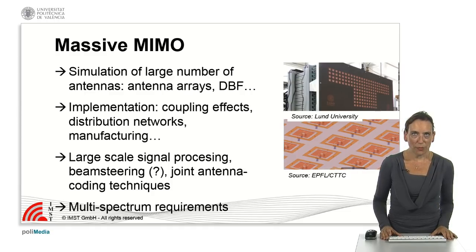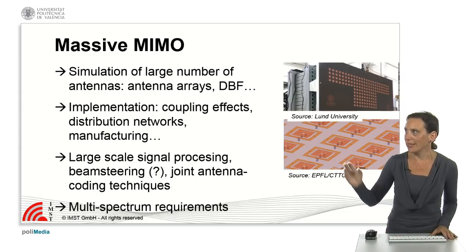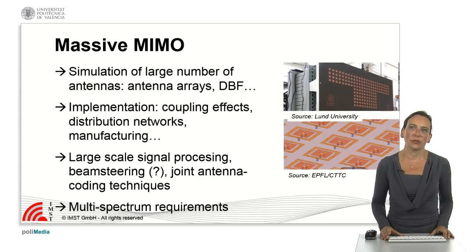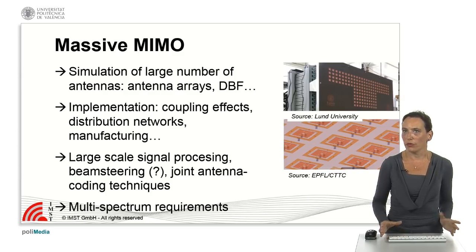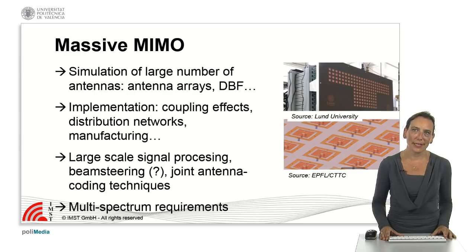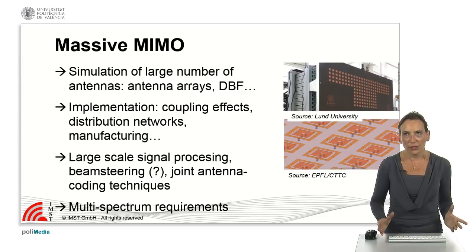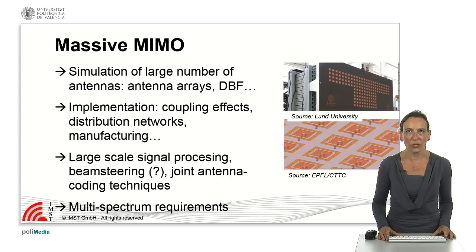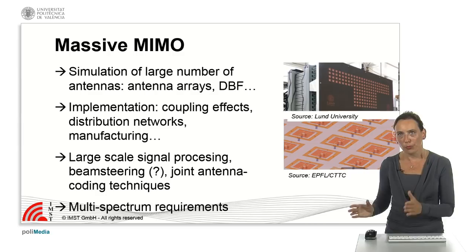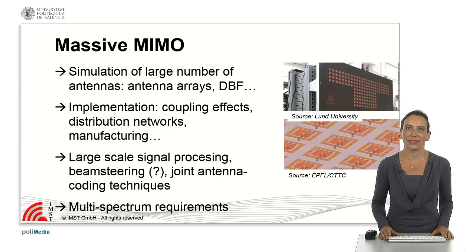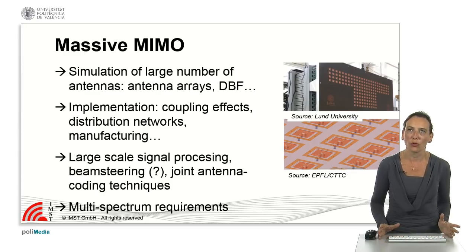Massive MIMO will also be a challenge because we will have to design very large arrays like we can see here. To design them, we will need to simulate a very large number of antennas and also simulate the effects of, for example, digital beamforming. We also have problems linked to the implementation of these big arrays: the coupling effects between different elements, the design of distribution and feeding networks, and manufacturing issues. We also have to deal with large scale signal processing, possible beam steering of these arrays, and what was recently called joint antenna coding techniques — going beyond pure signal processing and pure antenna design to bring both fields together for more efficient antennas. We also cannot forget the multi-spectrum requirements.